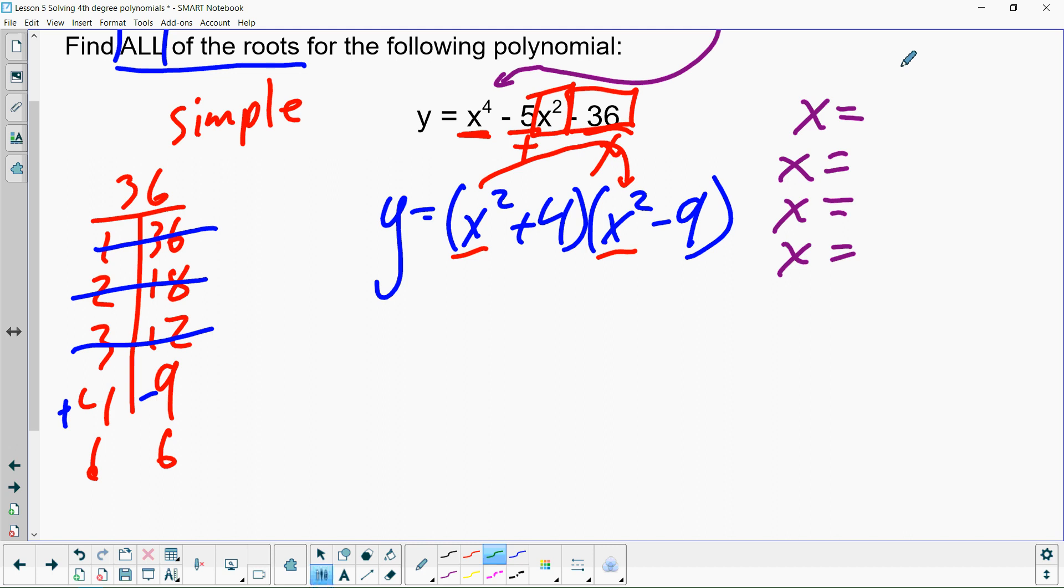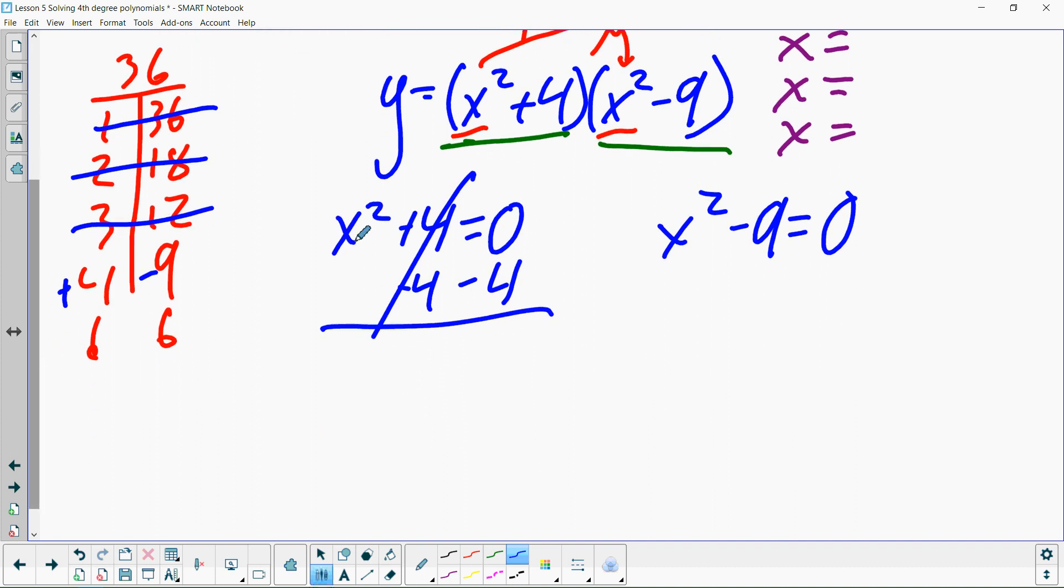The way you get these four roots is you take these two factors and set them equal to 0 and solve for x. So we're going to do just that. So x squared plus 4 equals 0, and x squared minus 9 equals 0. We need to solve these. So we just need to get the x by itself. So here, I'm going to subtract 4 on both sides. Those fours cancel. Bring down our x squared. Equals 0 minus 4 is negative 4.